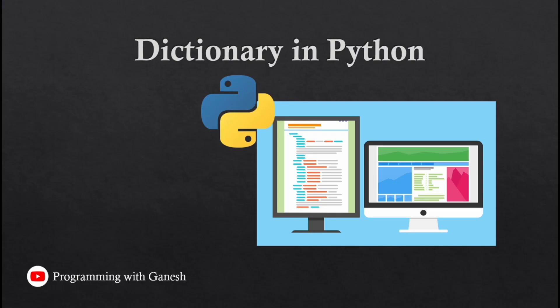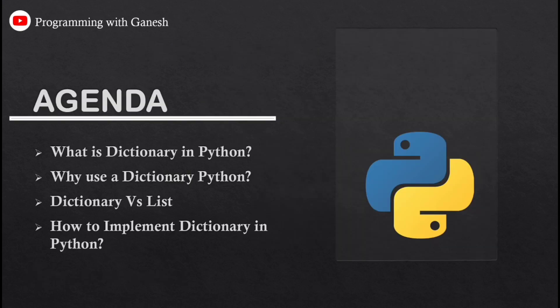Hello guys, I am Ganesh. We are going to continue with the series on Python. In this session we are going to see the dictionary data type in Python. The agenda covers: what is a dictionary data type, why we use it, the difference between dictionary and list, and finally the implementation of the dictionary in Python.